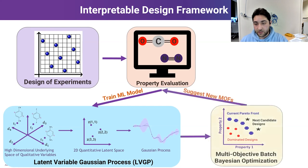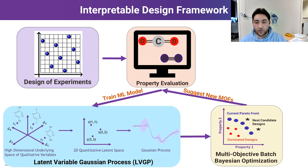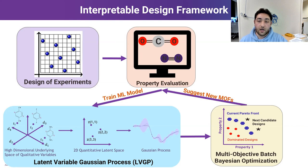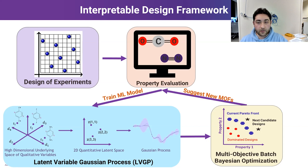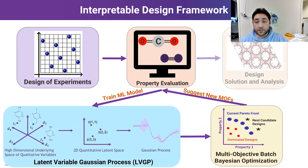Then comes Bayesian optimization. We perform multi-objective batch Bayesian optimization, as we have two properties of interest, and this suggests new MOFs for us to simulate.